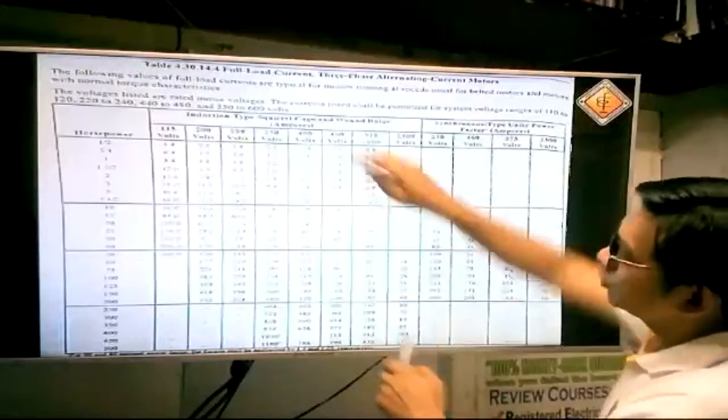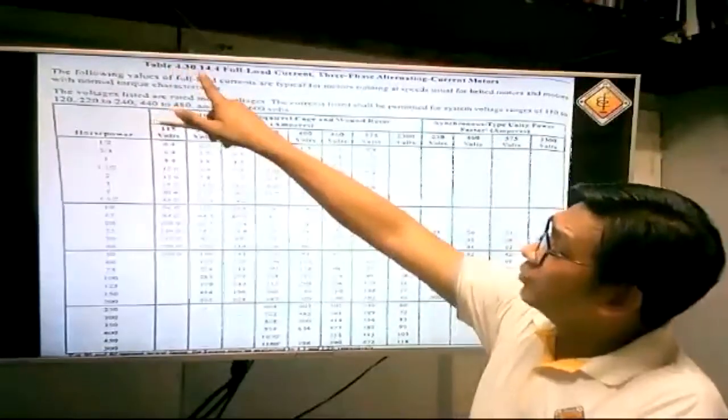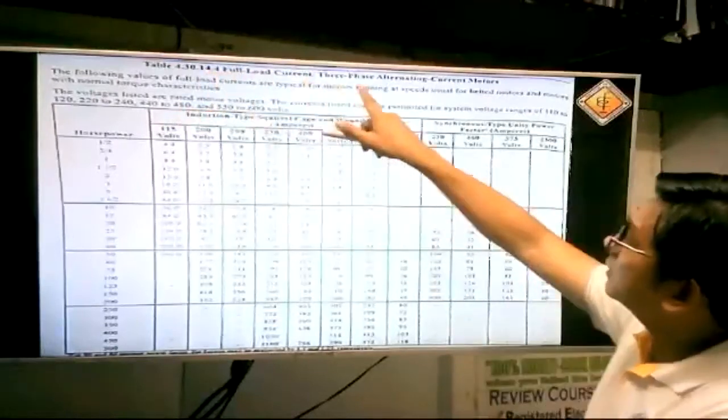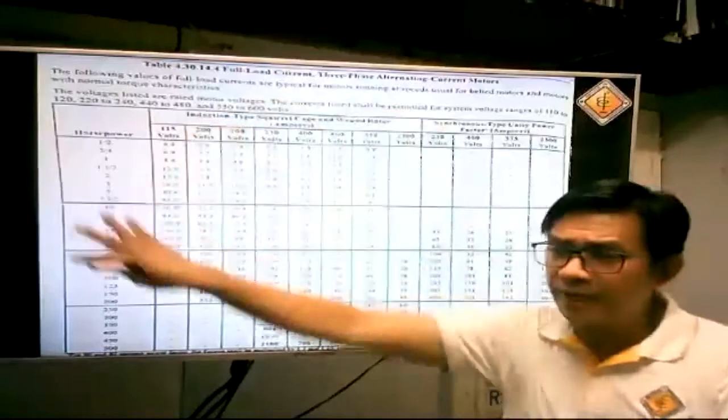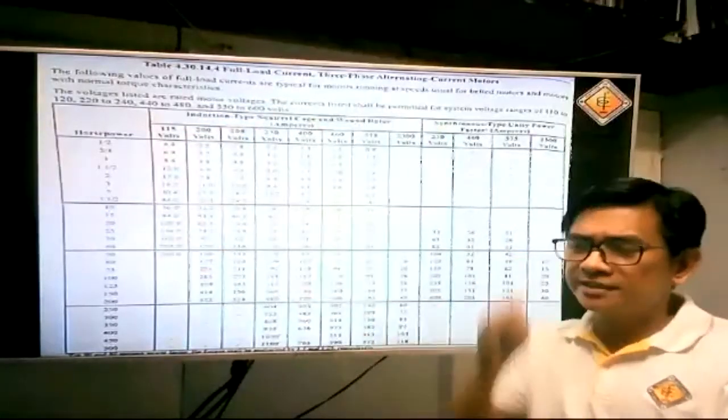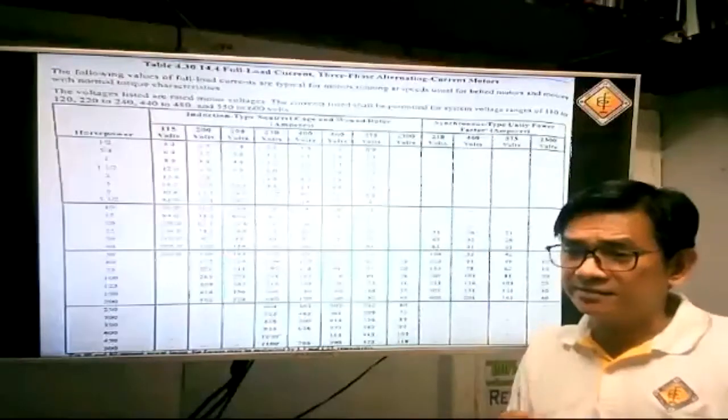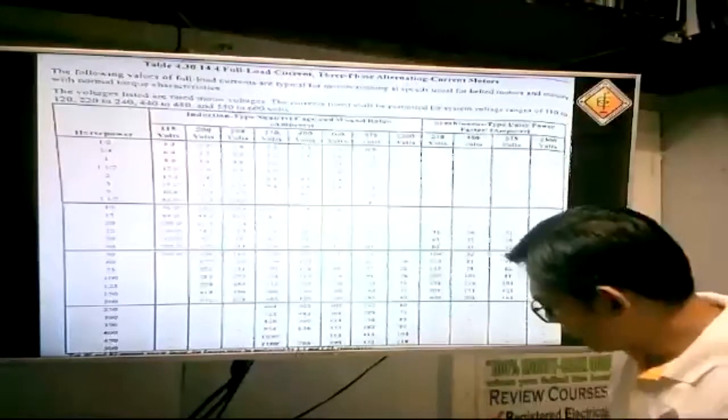Siguro, next time partner, wala muna yung sagot, no? Para medyo excitement. Okay. 10 horsepower. Ito po, nasa table, 4.3, 4.30, 14.4. The full load current 3 phase alternating current motors. Iba po ang table na to, kumpara po sa single phase kanina.